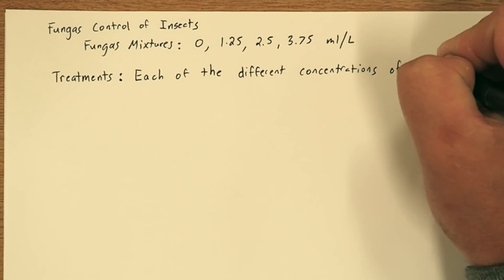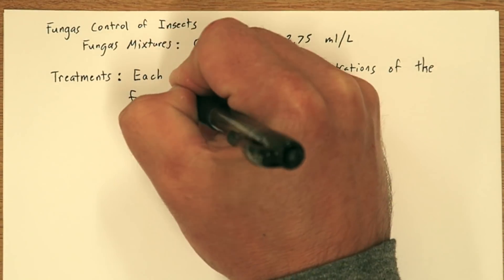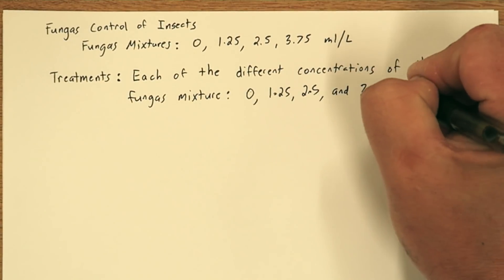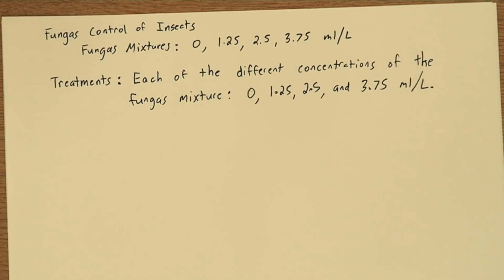The treatments are each of the different concentrations of the fungus mixture: 0, 1.25, 2.5, and 3.75 milliliters per liter.